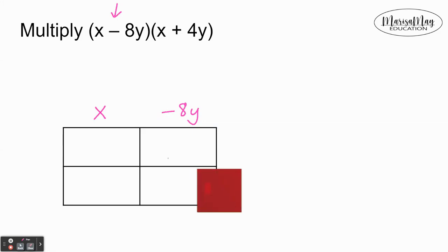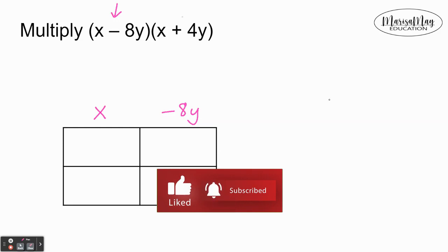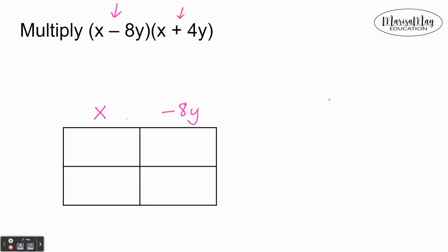Then let's take the second parentheses and write them on the side, so I've got x and 4y. Now remember that my box here is simply an organization tool. There's no magic in it; it just helps me make sure I don't miss any of the multiplication that needs to happen in order to multiply this correctly.